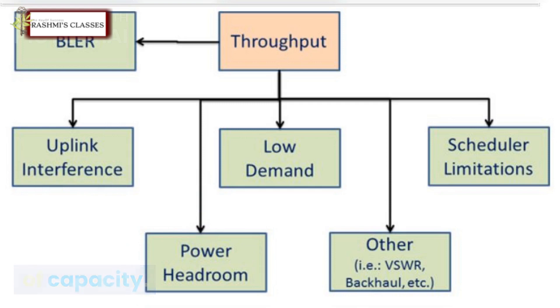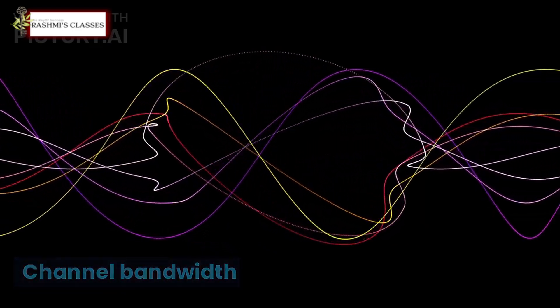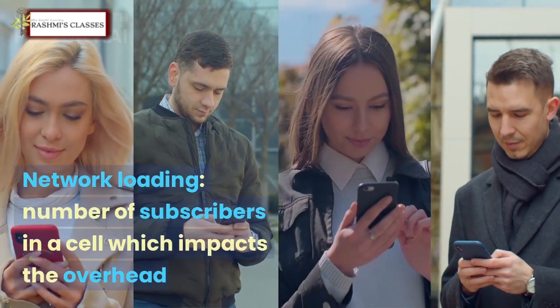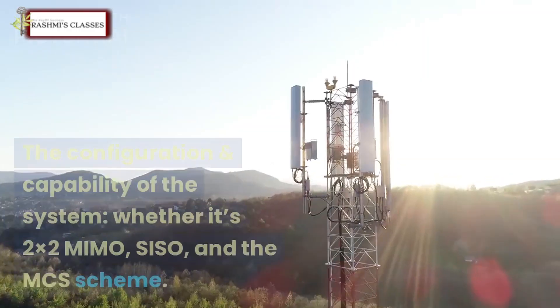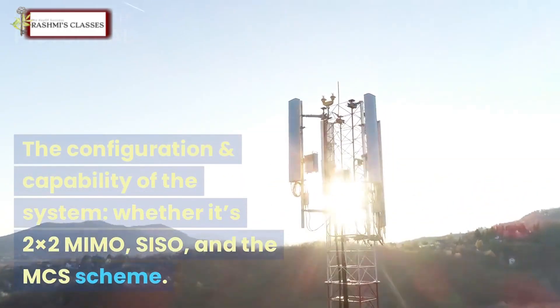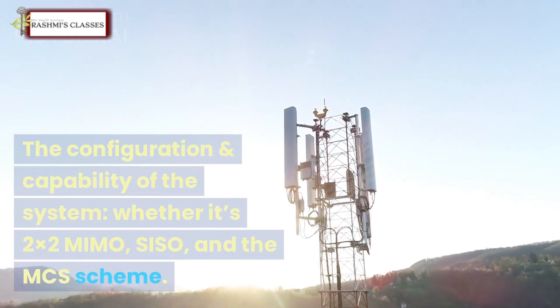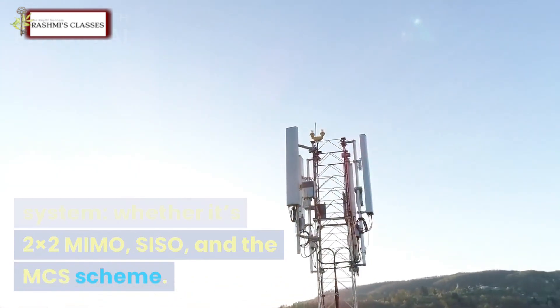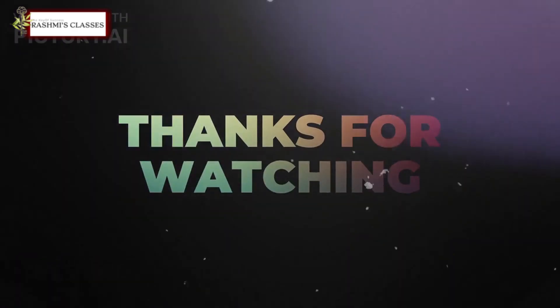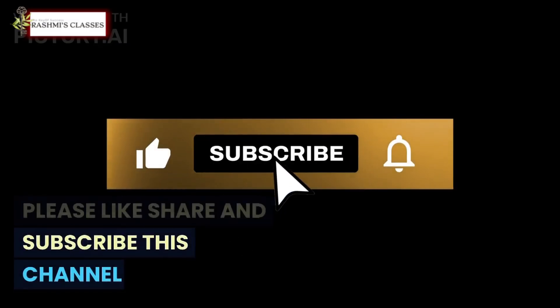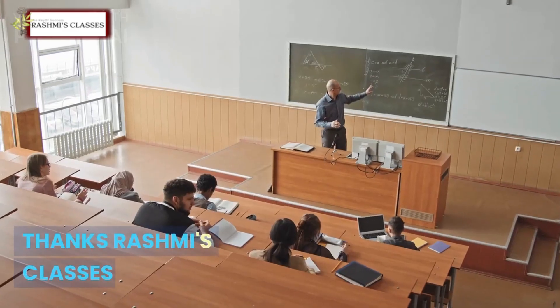To conclude, the LTE capacity depends on the following: channel bandwidth, network loading, number of subscribers in a cell which impacts the overhead, the configuration and capability of the system whether it's 2x2 MIMO or SISO, and the MCS scheme. Thanks for watching the video. Please like, share, and subscribe to this channel. Thanks, Rashmi's Classes.